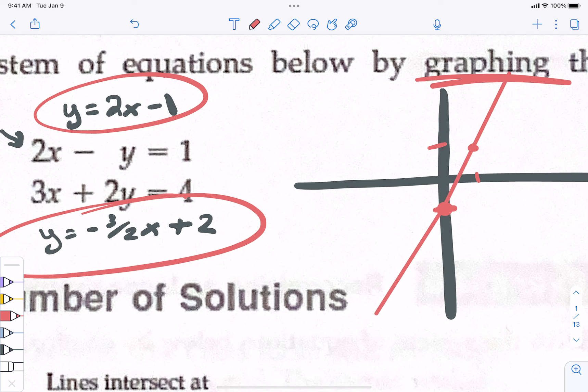Start with minus 1. And then from there? Up 2 over 1. There's my first, the top equation. The bottom one, I'm going to graph it in a different color. Starting at 2. And going down 3 over 2.